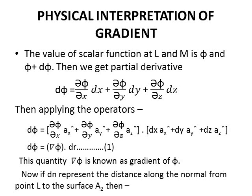This equation can be written in vector form as d phi equals del phi upon del x ax cap plus del phi upon del y ay cap plus del phi upon del z az cap dot product with dx ax cap plus dy ay cap plus dz az cap. The first term of this equation represents del phi and the second term represents dr. This quantity del phi is known as gradient of phi.